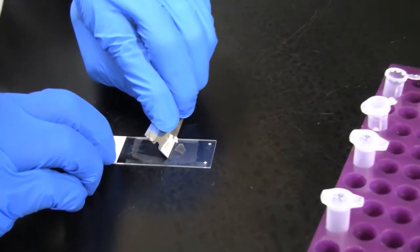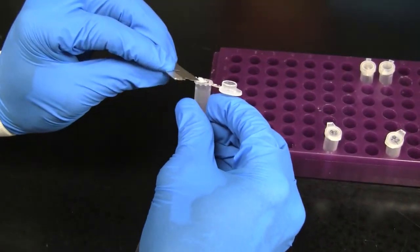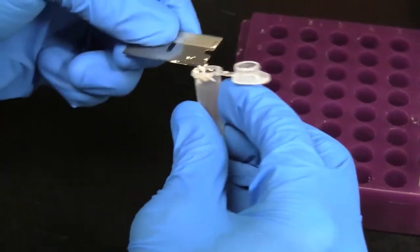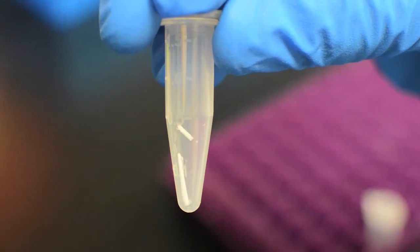If the sample is on a slide, use a clean razor blade to carefully scrape the sample into a 1.5 milliliter tube. If samples are small, several slides can be processed in the same tube. Curls are already in the tube.